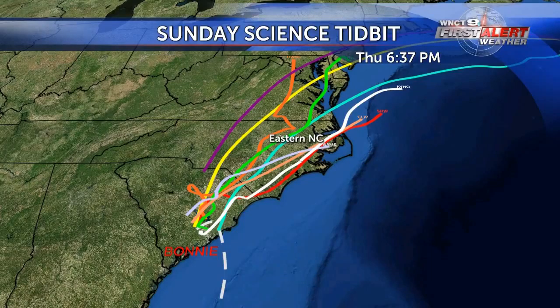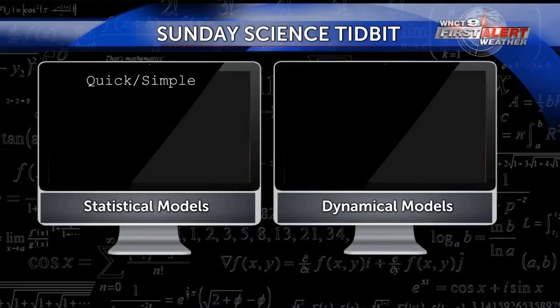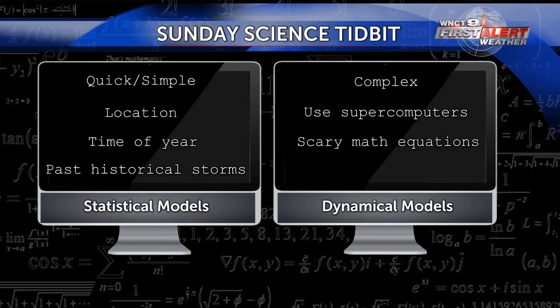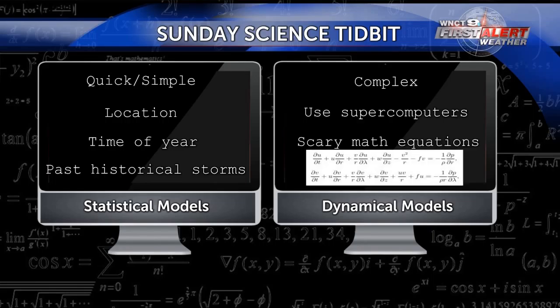The two basic types are statistical and dynamical models. Statistical models are the quickest and simplest of the models and they rely on location of the storm, time of year, and behavior of past storms. Dynamical models, or numerical models, are quite complex because they use big scary math equations to calculate the atmosphere and need powerful supercomputers to run on.